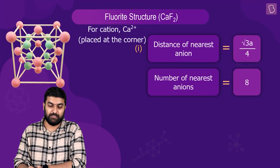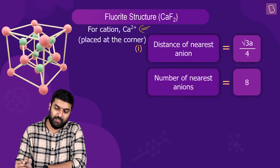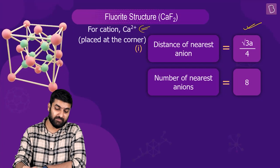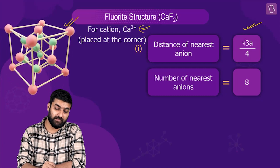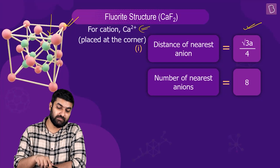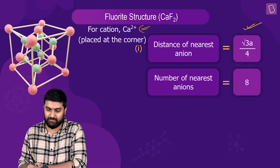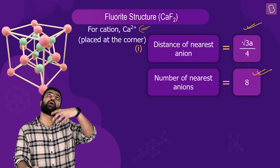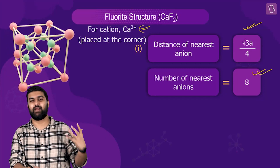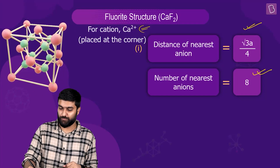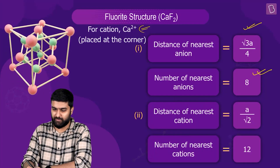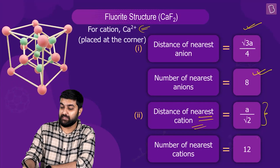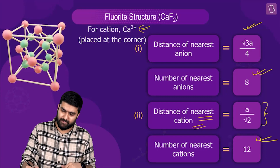The distance to the nearest anion has already been discussed — you can find it from the tetrahedral void geometry. The number of nearest anions is eight, since this corner is part of eight unit cells, all tetrahedral voids are filled. For the nearest cation, that turns out to be the face center, and hence the coordination number for nearest cations turns out to be 12.